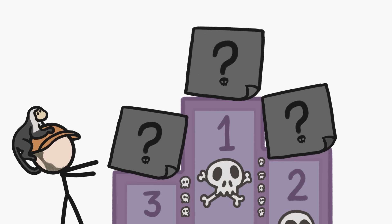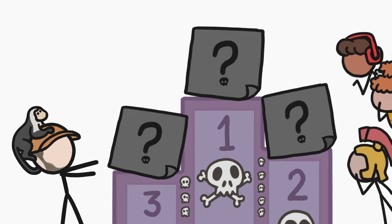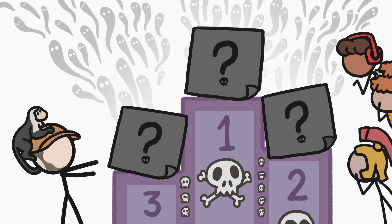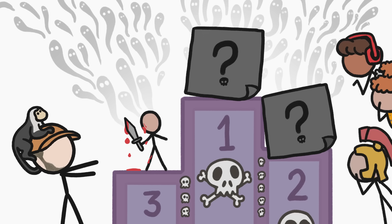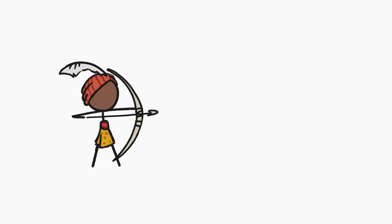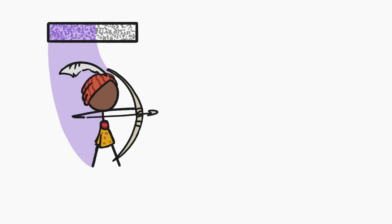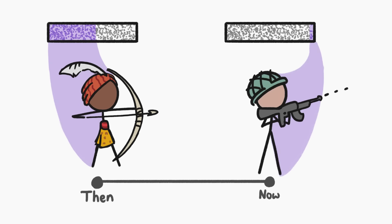Now let's get to those three killers, which have been on a spree since the dawn of humanity and have likely dispatched more people than anything else. The first is other humans. Researchers estimate that violence and wars have killed around 3 billion people throughout history. In some ancient cultures, they were responsible for more than half the deaths. And while things are a lot better today, violence still kills around a million people each year worldwide.